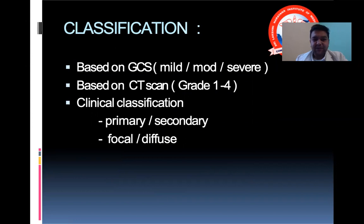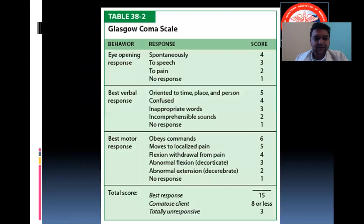One classification is based on GCS, which is the Glasgow Coma Scale. Another is based on CT scan, and the third is based on clinical classification — that is primary or secondary injury, or a focal or a diffuse injury.